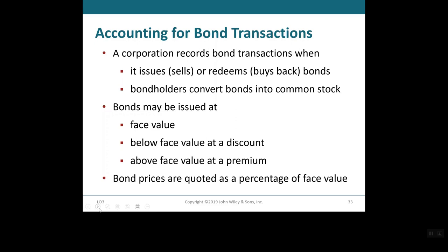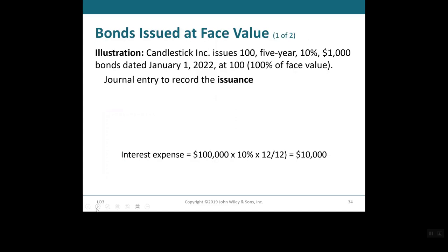Bonds may be issued at face value, below the face value (that's a discount), or above the face value (which is a premium). Bond prices for both new issues and existing bonds are quoted as a percentage of the face value. For example, a $1,000 bond with a quoted price of 97 means the bond sold for $970 — the face value of $1,000 times 97%.